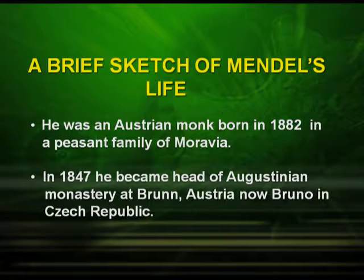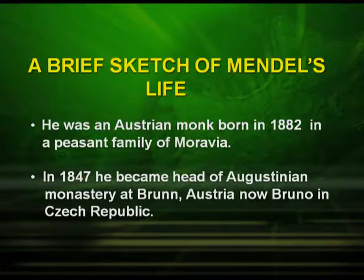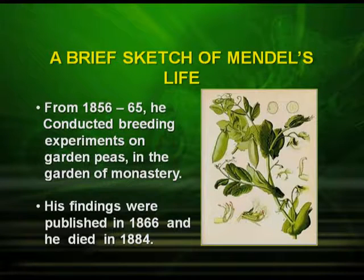He was an Austrian monk, born in 1822, in a peasant family of Moravia. In 1847, he became the head of Augustinian Monastery, Brünn, Austria — now Brno in the Czech Republic. From 1856 to 1865, he conducted breeding experiments in the garden peas in the monastery. His findings were published in 1866 and he died in 1884.